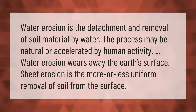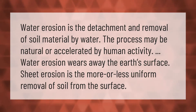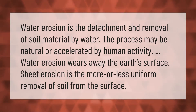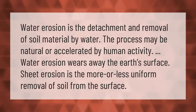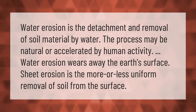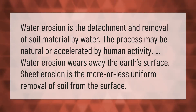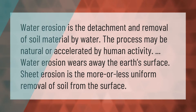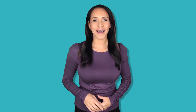Water erosion is the detachment and removal of soil material by water. The process may be natural or accelerated by human activity. Water erosion wears away the earth's surface. Sheet erosion is the more or less uniform removal of soil from the surface.